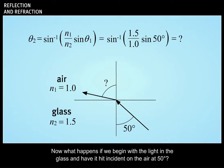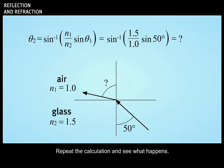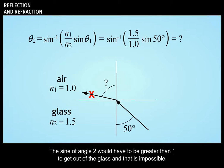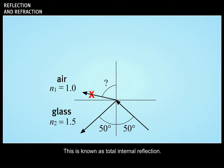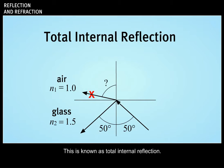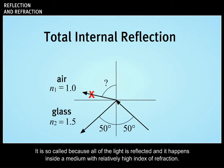Now what happens if we begin with the light in the glass and have it hit incident on the air at 50 degrees? Repeat the calculation and see what happens. Your calculator should have given you an error message. The sine of angle 2 would have to be greater than 1 to get out of the glass and that is impossible. In this case, all of the light is reflected inside the glass.